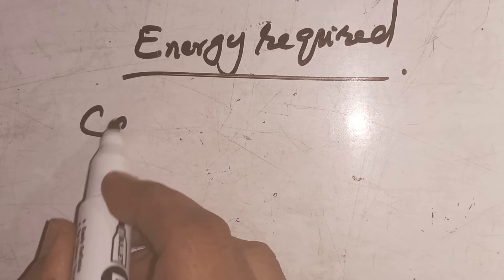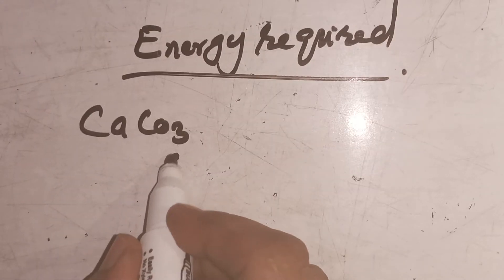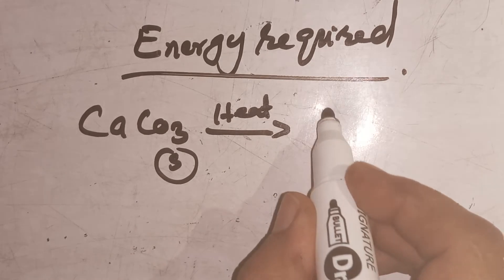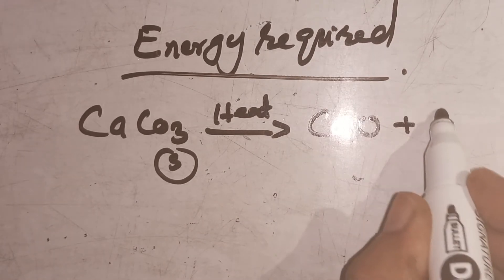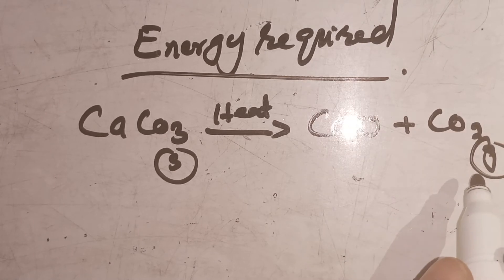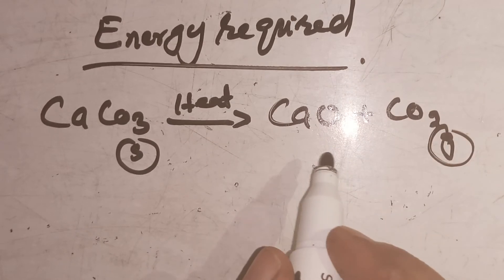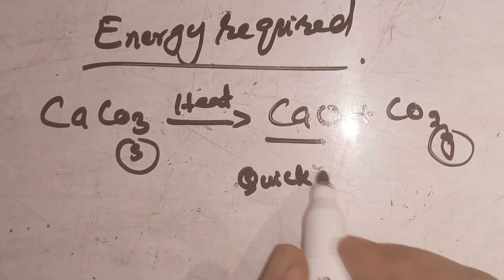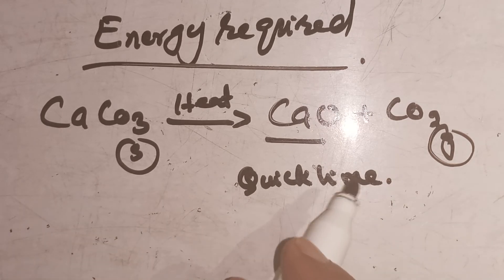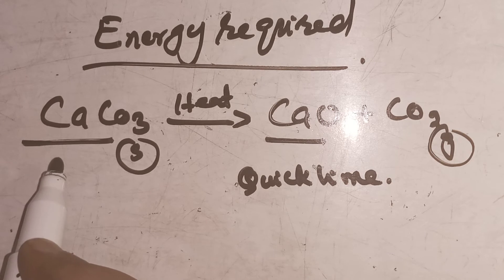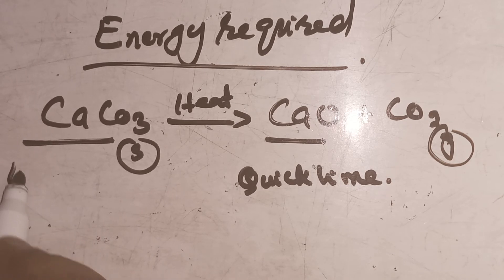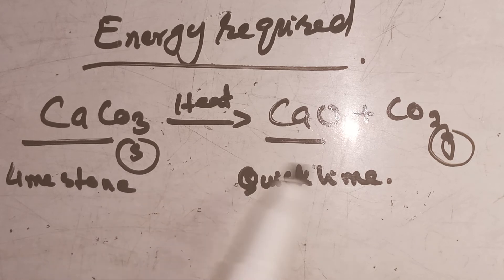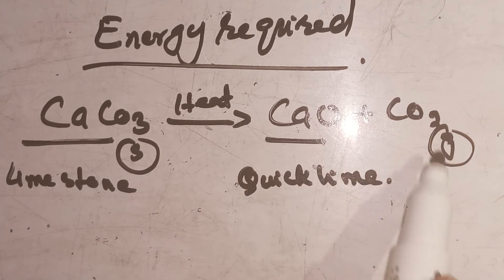Suppose we have calcium carbonate, CaCO3. Now we will heat it up. When heated, it forms calcium oxide, CaO, plus carbon dioxide, CO2. Carbon dioxide is a gas. Calcium oxide is also called quicklime. This is limestone, calcium carbonate.